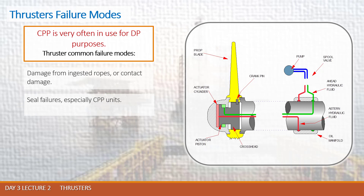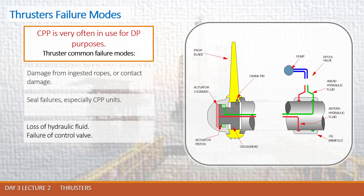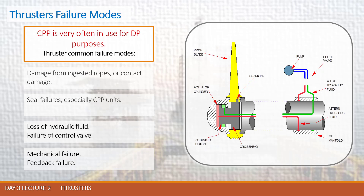Loss of hydraulic fluid may give us a problem in command of the blade. Failure of the control bulb gives us non-response from the blade. Any other mechanical failure in the piston group may give us a non-commandable blade. Feedback failure may happen due to all these discussed problems, and then the blade will not follow the indicator placed at the bridge.